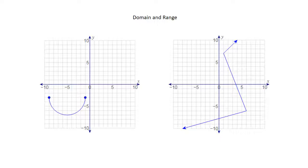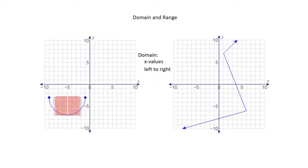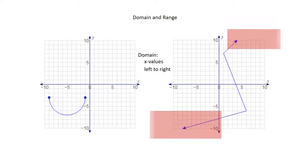The next thing we're going to look at is domain and range. For domain, you're going to get in the habit of thinking of domain as x values, and x values are left to right. So we're going to look at how the graph behaves to the left and to the right — does it have an end point, or will it continue indefinitely with arrows, left to right?